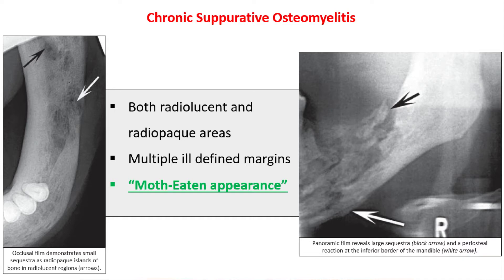In chronic suppurative osteomyelitis, we can see multiple ill-defined margins, a lot of radiolucent areas interspersed with radio-opaque areas — which represent sequestra. There is both bone destruction and presence of necrotic bone, giving a characteristic moth-eaten appearance.